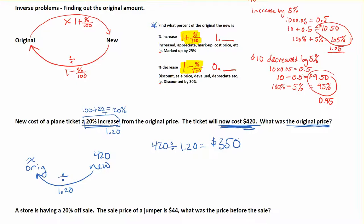Just to keep that in mind — if you just try to find 20% of 420 and subtract it, you will not get the same amount. That's because the 20% increase was 20% of the original amount, which is smaller than the new price. You've got to work backwards by knowing that 420 is 120% of the original, and dividing by 1.2 to find the original.